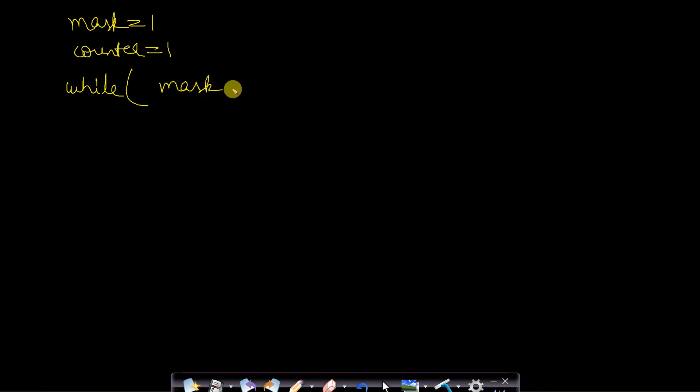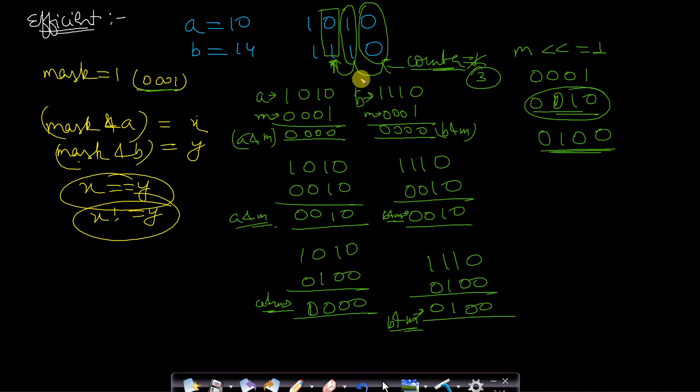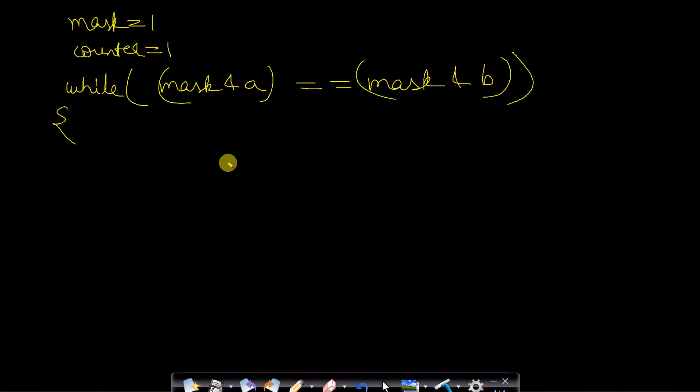While mask ANDed with A value equals mask ANDed with B value, this is a bitwise AND. Whenever the mask values are same, then I have already shown you that when the mask value is the same, then the corresponding bits in both the numbers are the same. So we will just skip it, we will just left shift the mask value by 1 bit and we will increment the counter value. Counter will be incremented by 1.